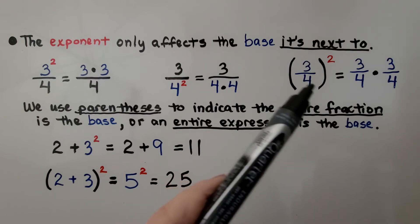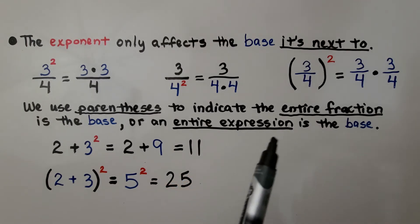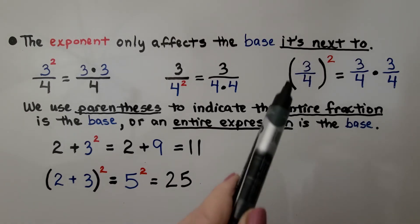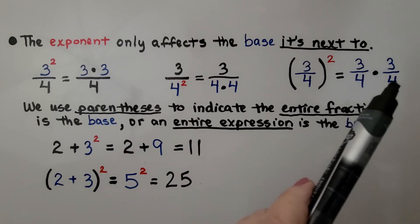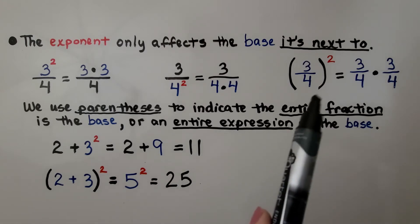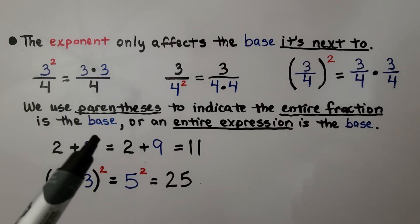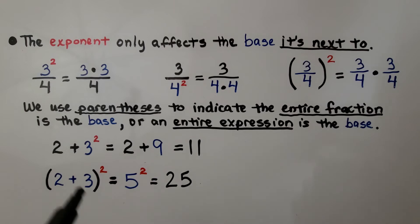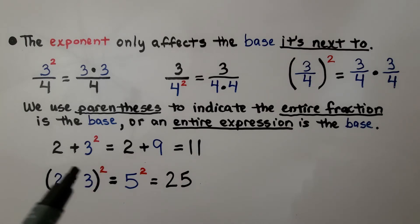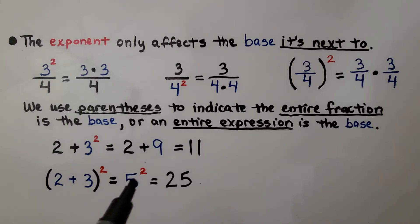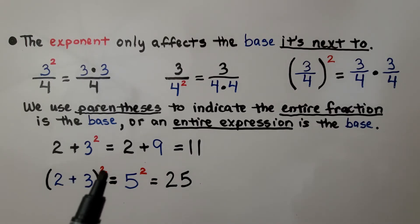If we have 3 fourths inside parentheses raised to the second power, this means the entire fraction is the base. 3 fourths is the base, so we're going to do 3 fourths times 3 fourths. We use parentheses to indicate the entire fraction or an entire expression is the base. If we have 2 plus 3 raised to the second power, we have 2 plus 9, because 3 times 3 is 9, which equals 11. If we have 2 plus 3 inside parentheses raised to the second power, we do 2 plus 3, which is 5, then 5 raised to the second power — 5 times 5 is 25. The exponent only affects the base it's next to, or the fraction or expression inside parentheses.